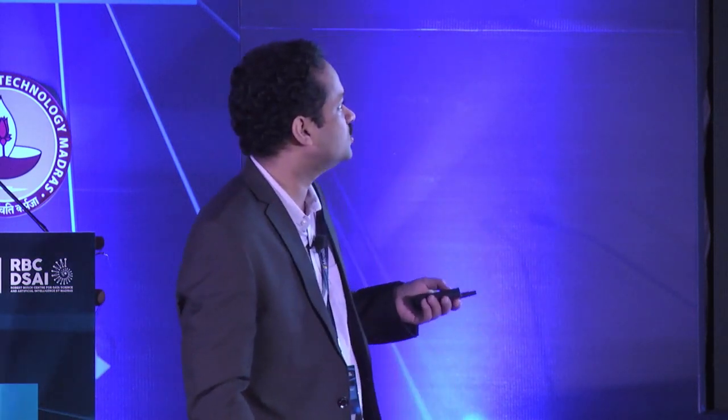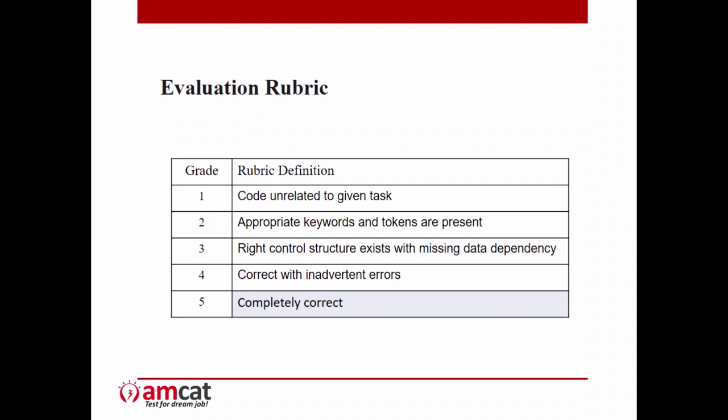Using this intuition gave us a way to translate this into a research question. This is the problem-independent rubric we framed — grading every code on five levels. Level five is completely functionally correct. Level four is correct with inadvertent errors like an initialization error. Level three has the right control structures but missing data dependencies — you have a nested for loop, but the conditionals are not right. Level two is just having the keywords and tokens present. Level one is code unrelated to the given task.